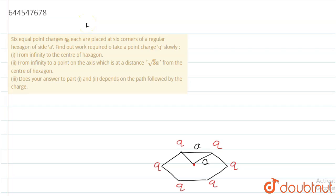Hello, the question says 6 equal point charges q0 each are placed at 6 corners of a regular hexagon of side a. Find the work required to take a point charge q slowly from infinity to the center of the hexagon.